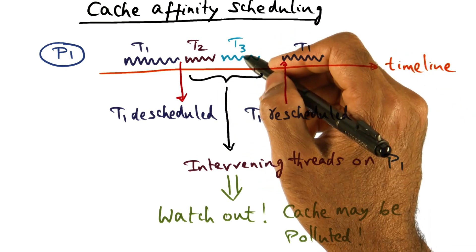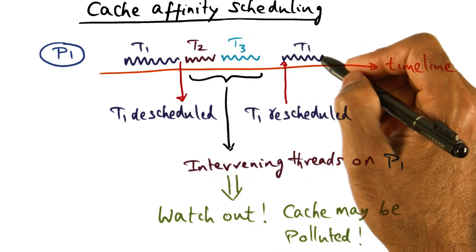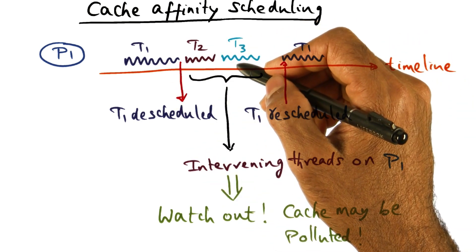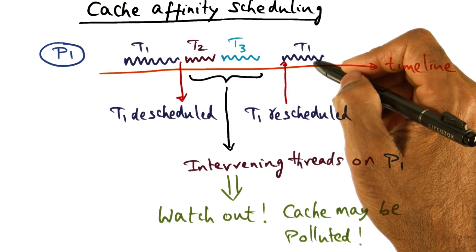Because these two threads that got in the middle of its running on processor P1 may have polluted the cache and gotten rid of a lot of the stuff that used to belong to T1.